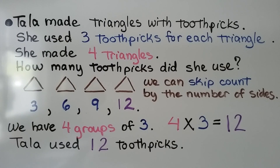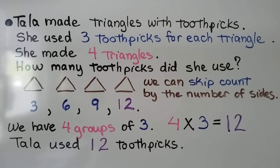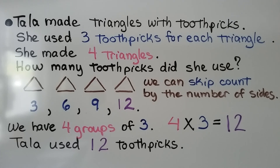Tala made triangles with toothpicks. She used 3 toothpicks for each triangle and she made 4 triangles. How many toothpicks did she use? Triangles have 3 sides, so she made 4 triangles. We can skip count by the number of sides: 3, 6, 9, 12. We have 4 groups of 3, so Tala used 12 toothpicks. 4 times 3 is equal to 12.